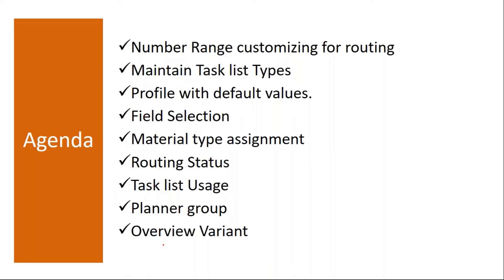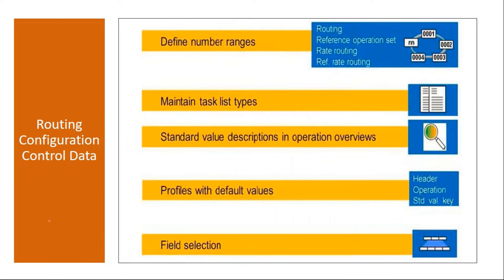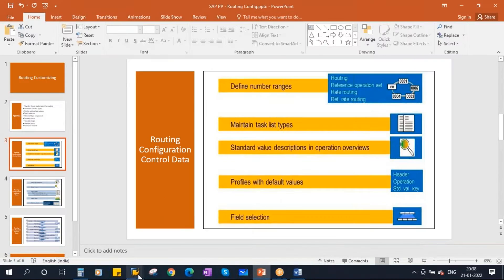First we'll start with the control data configuration. In the control data, we will define the number ranges, maintaining the task list types, standard value descriptions, profiles with default values, and the profile selection. These are the ones we will normally configure.